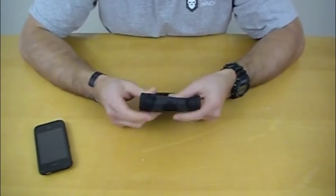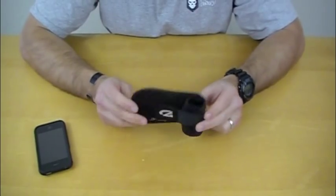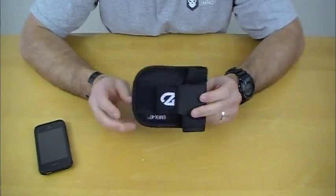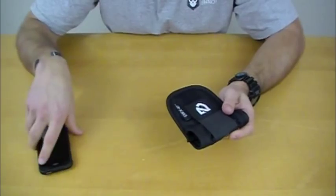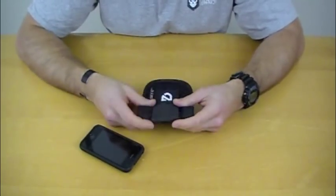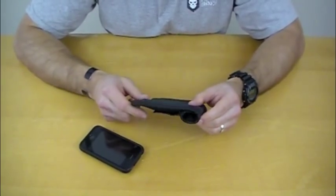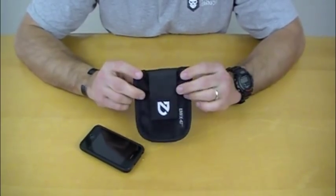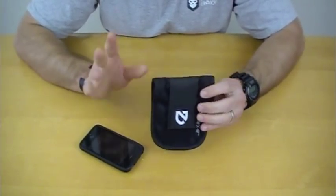Again, the only real guarantee that your phone isn't going to transmit is to remove the power source, which as you guys know, on an iPhone, you can't remove the battery from it. So I think that was one of the reasons that Nemo created this pouch in the beginning. I'd have to find out for sure.